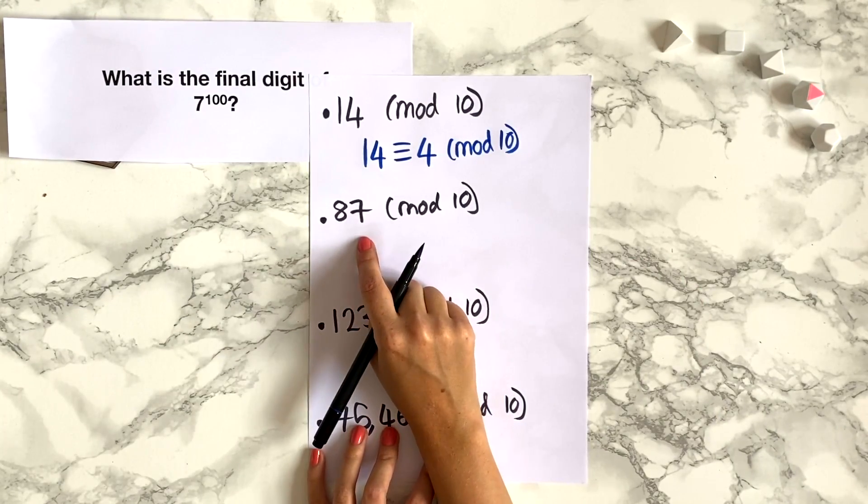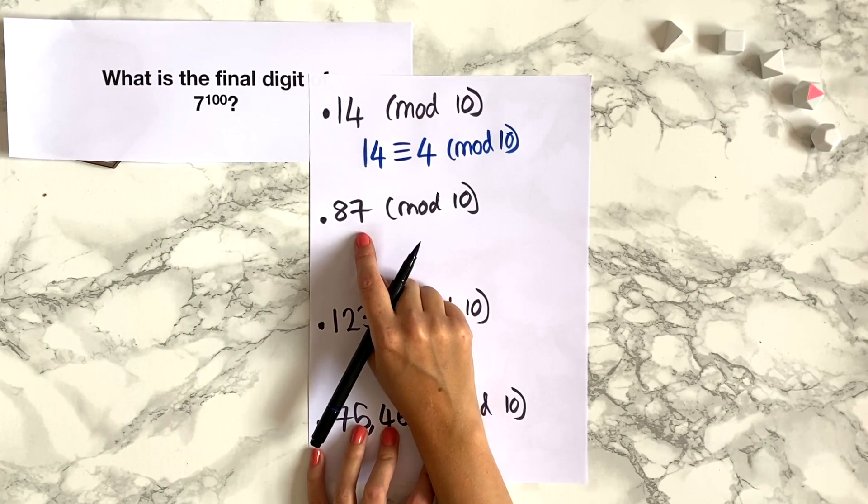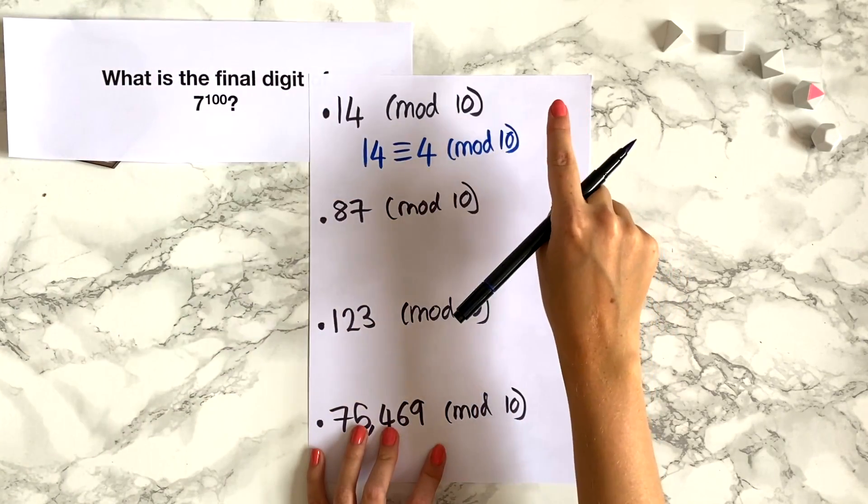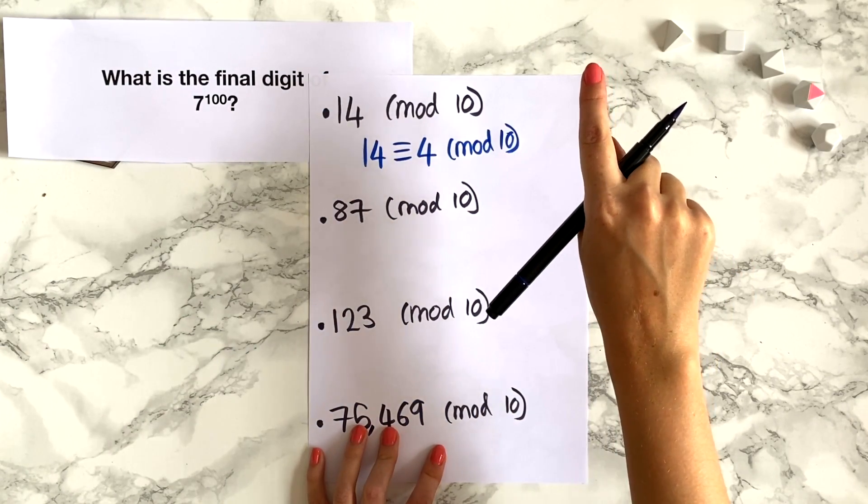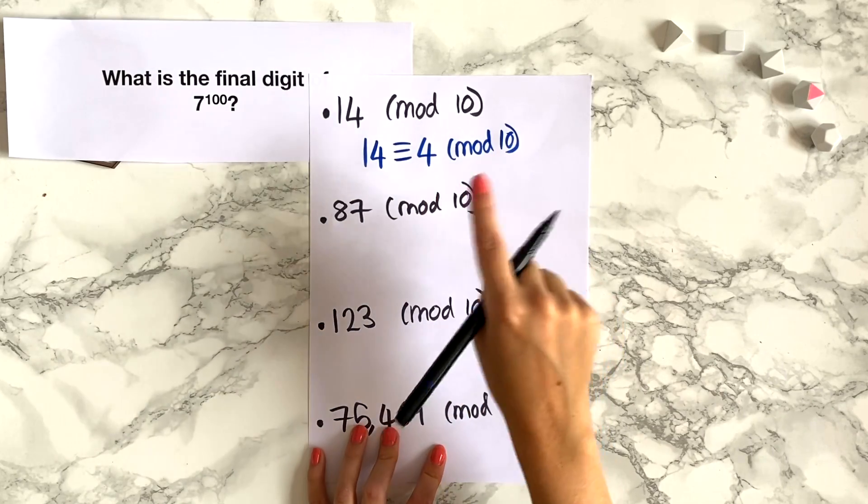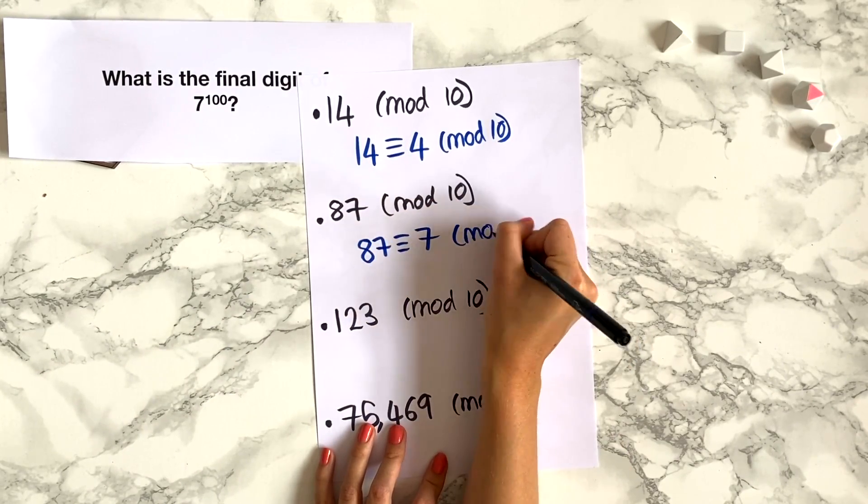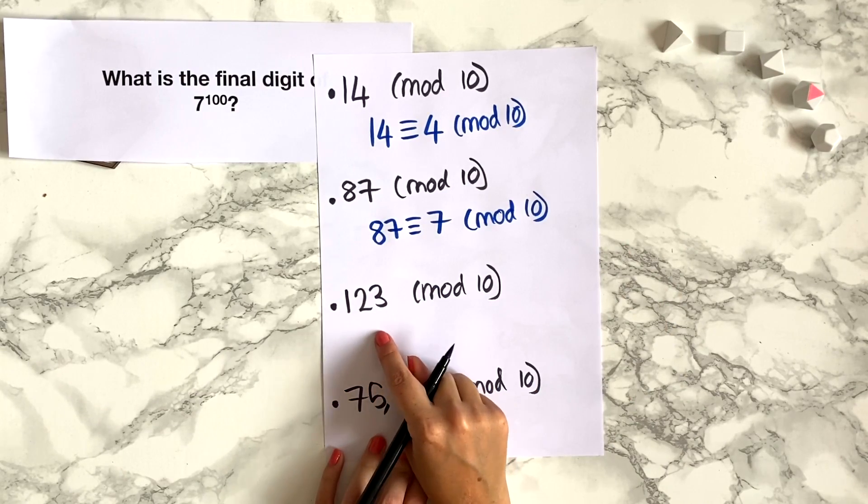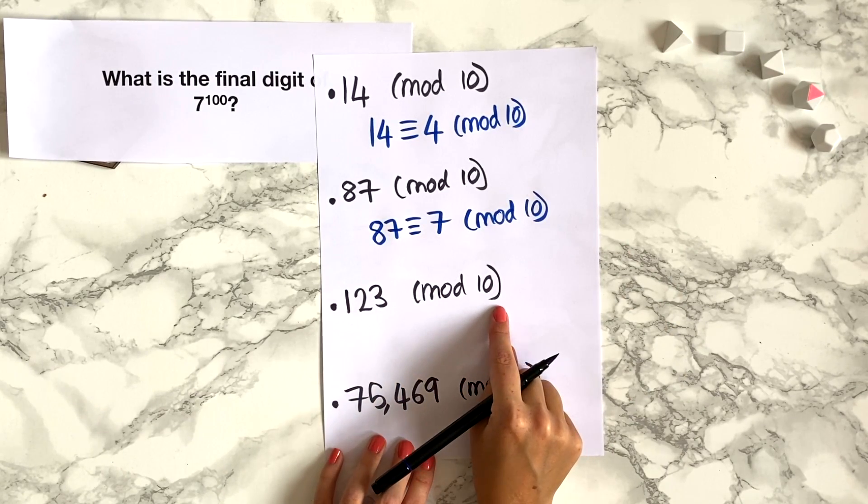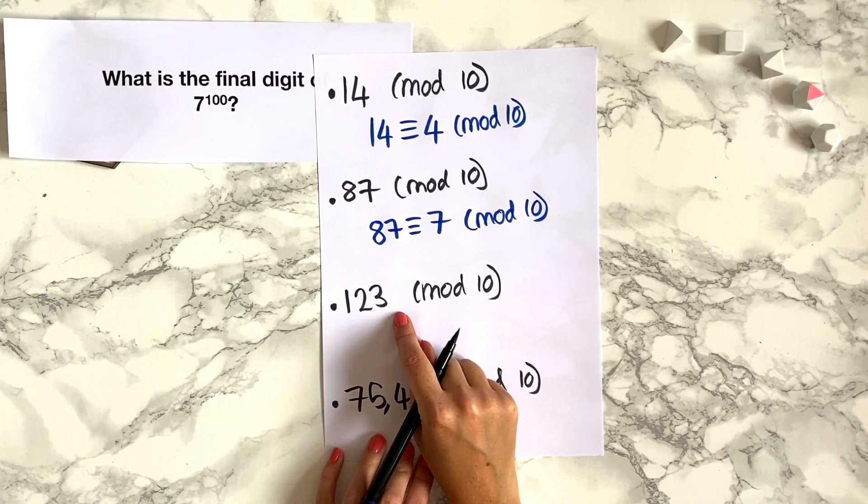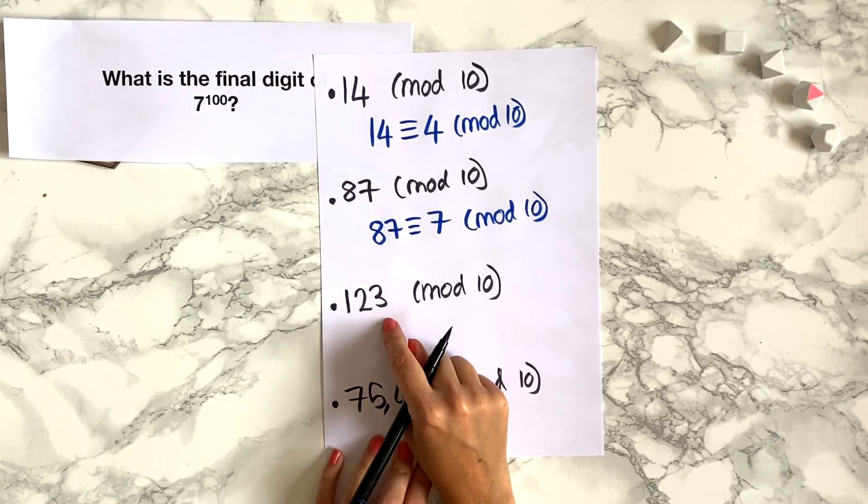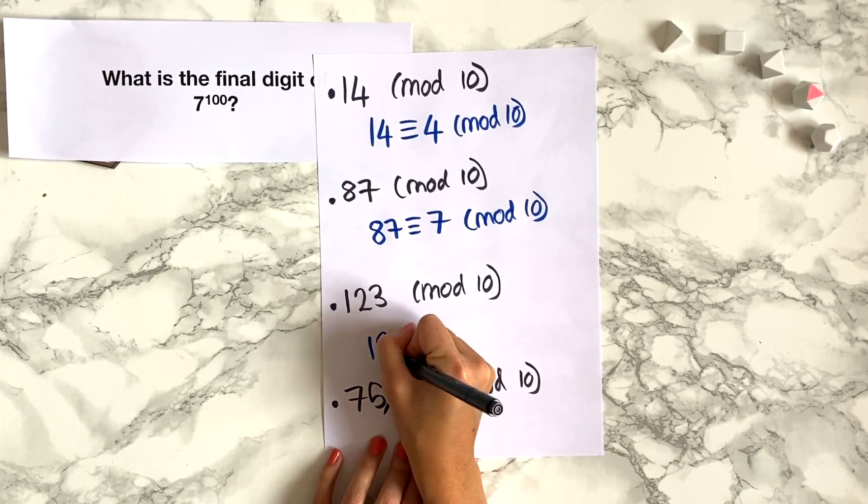How about 87? Well 80 is divisible by 10, so 80 would be at the top of the 10 hour clock and then to get to 87 we'd have to go to 7 o'clock, so 87 is congruent to 7 mod 10. How about 123 modulo 10? Well 120 is divisible by 10, so 123 will be congruent to 3 mod 10.